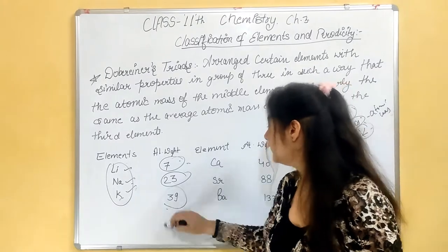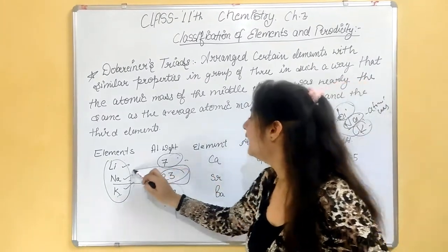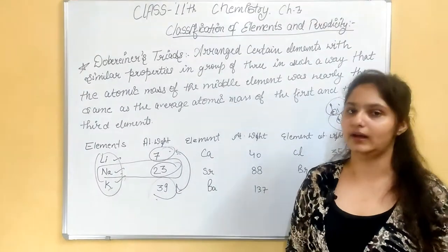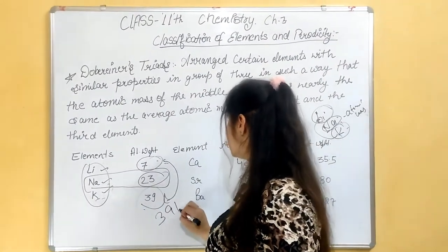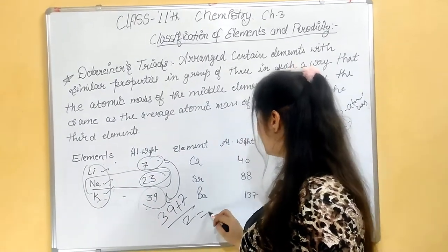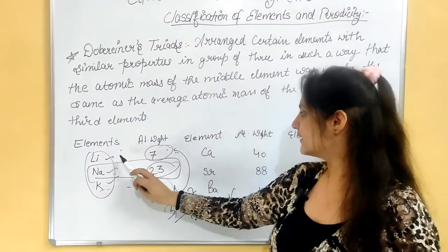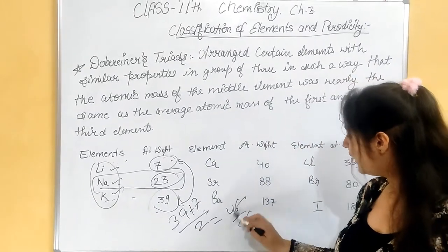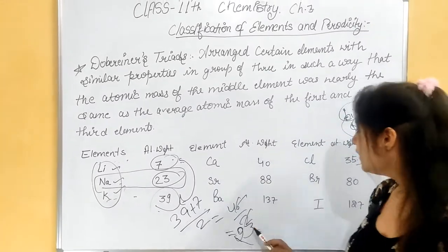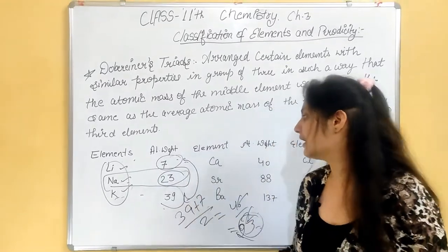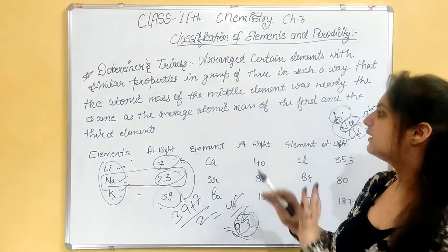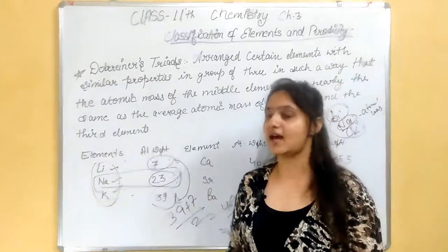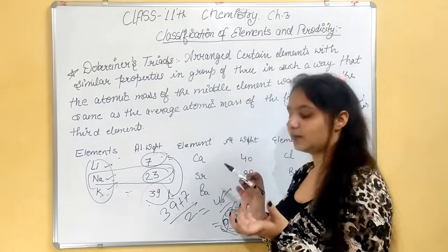For example, 39 plus 7 - when we take the average of the first and third element's atomic mass, we get nearly 23, which exactly matches Na's atomic mass of 23. So this is the trend - elements with same properties arranged in groups of three, where the middle element's atomic mass equals the average of the first and third elements' atomic masses.